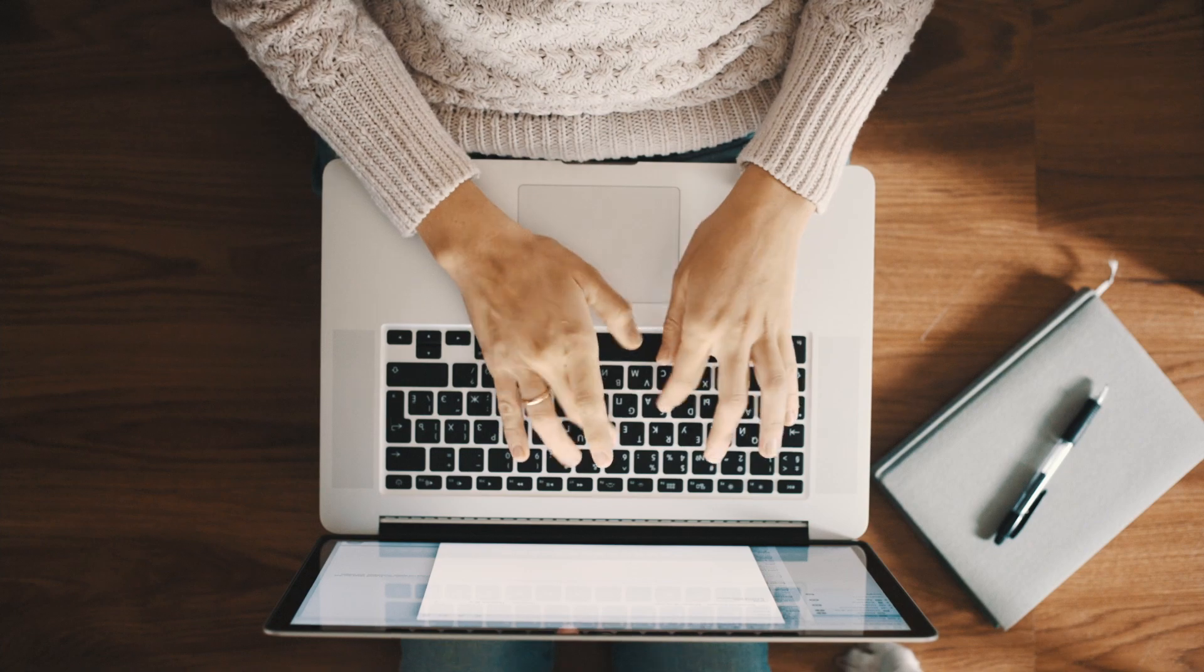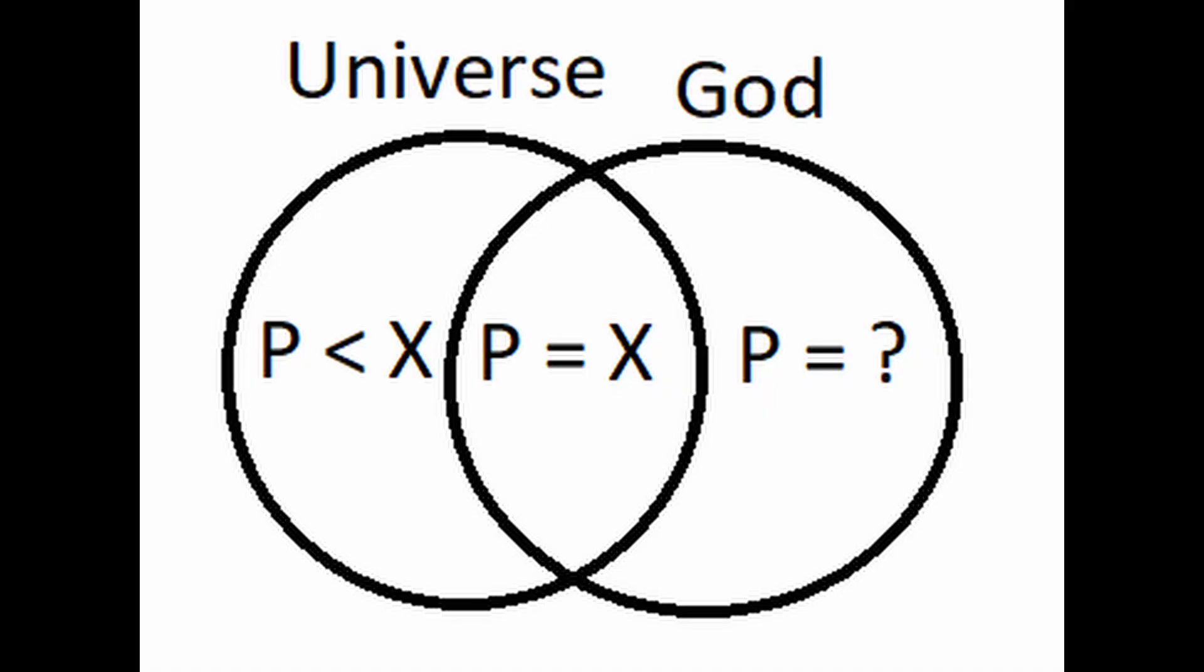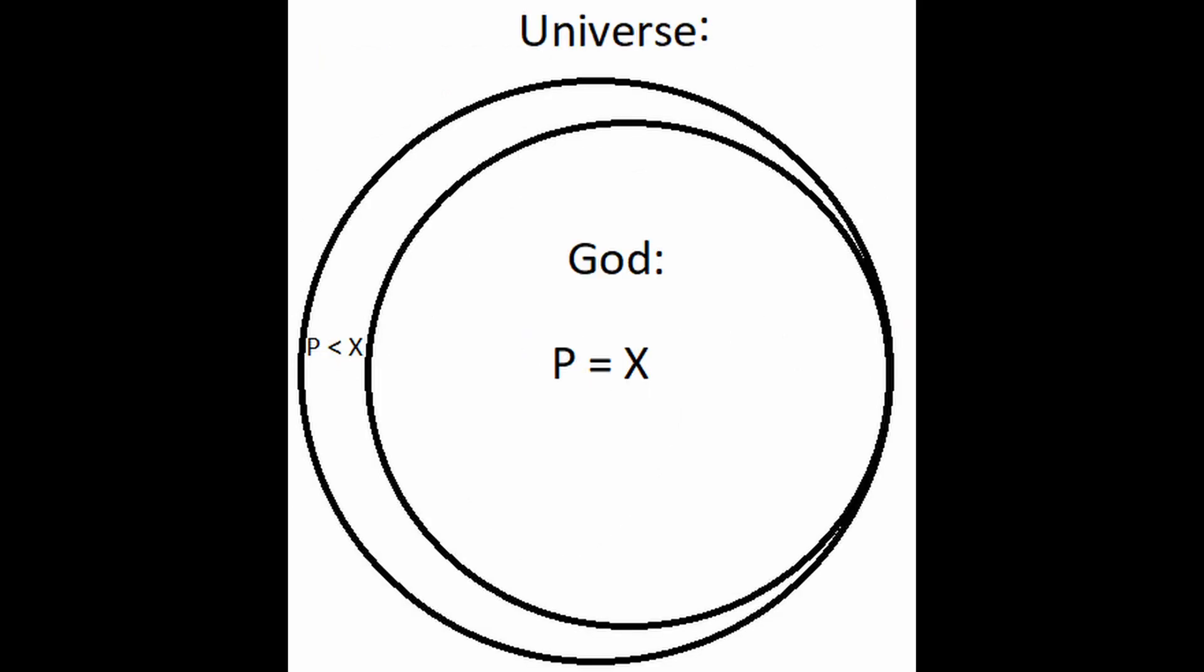In case it still doesn't make sense, take this Venn diagram. Now we know that the universe exists and possesses incredibly specific physical constants, so we can get rid of all the space which does not include a universe. At face value it would appear on the assumption that a finely tuned universe exists, then it would be highly likely that a God exists.